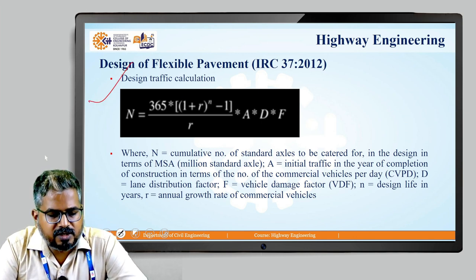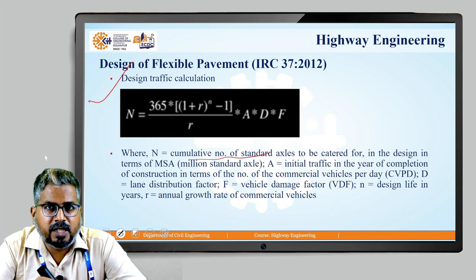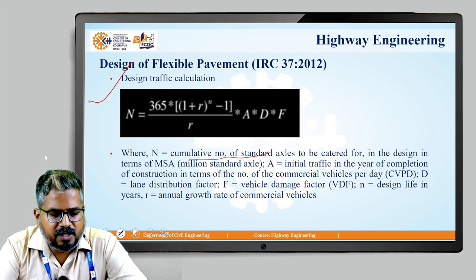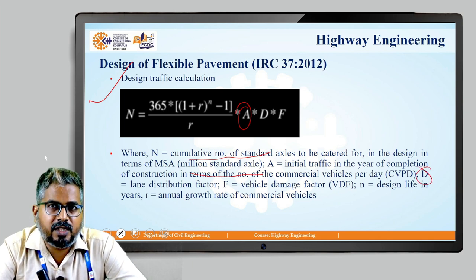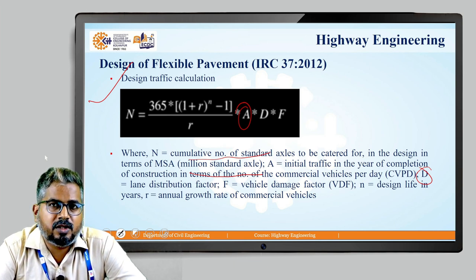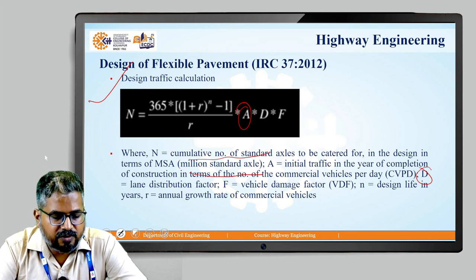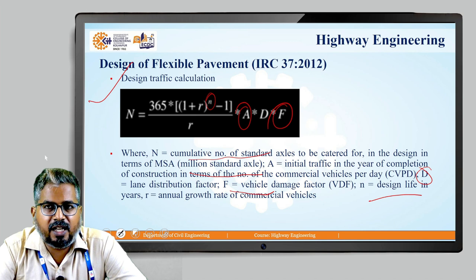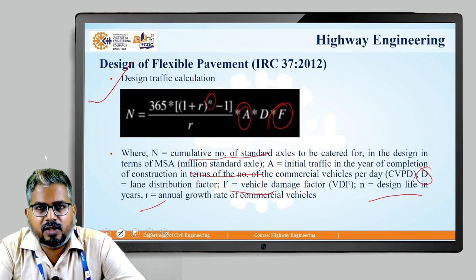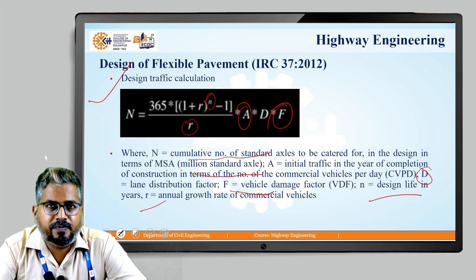In the first step, the design traffic N is defined as the cumulative number of standard axles to be catered for in the design, expressed in terms of MSA (million standard axles). A is the initial traffic in the year of completion of construction in terms of commercial vehicles per day (CVPD). D is the lane distribution factor, which depends on the type of road — whether it is an undivided road with two-way traffic or otherwise. F is the VDF or vehicle damage factor, and n is the design life in years. R is the annual growth rate of commercial vehicles.